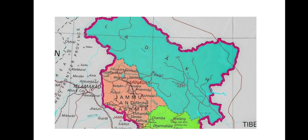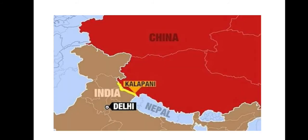The Nepal government has objected to the inclusion of the Kalapani area in the new political map of Kashmir. The nation made it clear on November 6 that the Kalapani territory, located in its far west, is an integral part of Nepal.